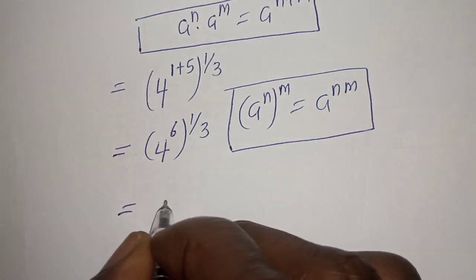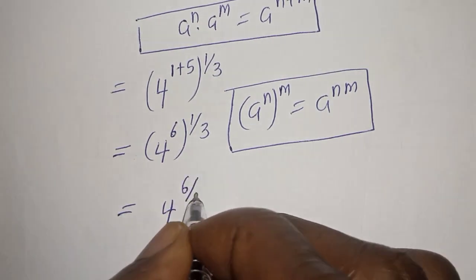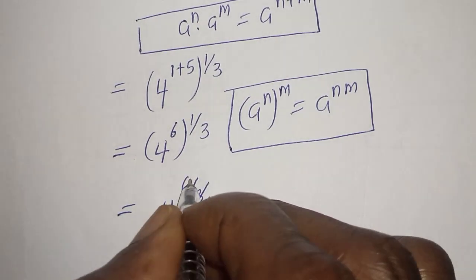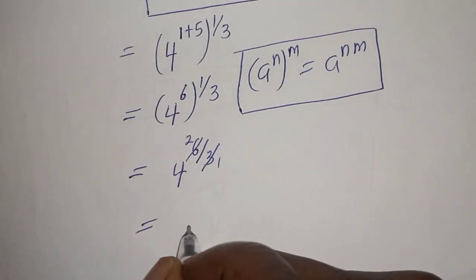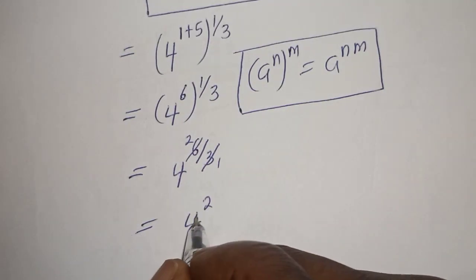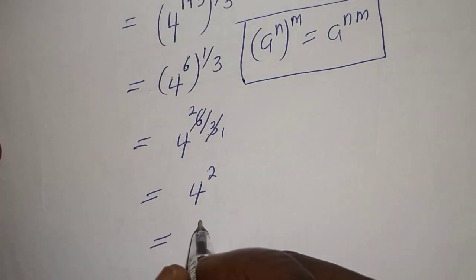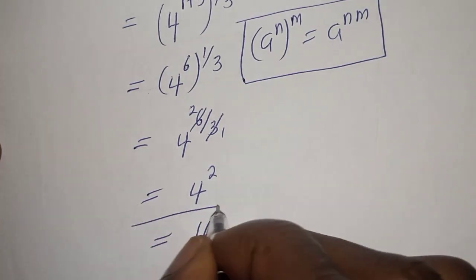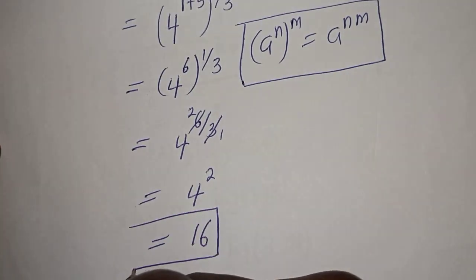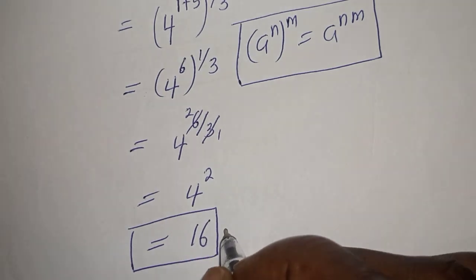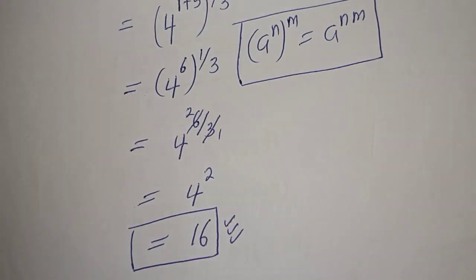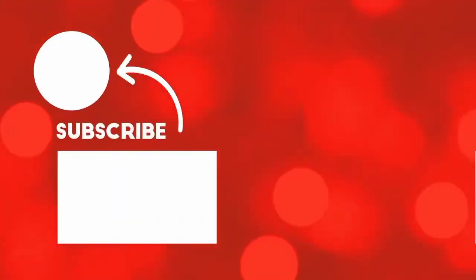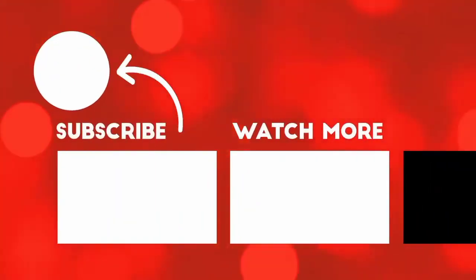This is equal to 4 raised to power 6 over 3, which is 4 raised to power 2. And 4 squared is equal to 16. This is the final answer. Before you leave, like, share, comment and subscribe — thank you, bye bye!